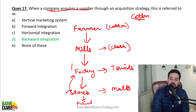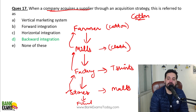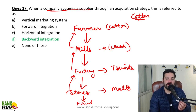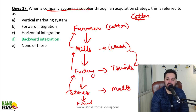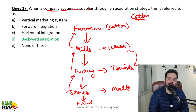Going further back — to the mills, or even to the farmers — that is still backward integration. On the other hand, if a mill is purchasing a t-shirt factory, that would be forward integration. Simple example: forward integration versus backward integration.